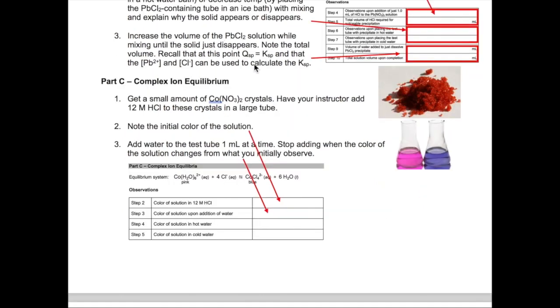Lastly, you will test the effect of volume change. Add water until your solid disappears. Record the volume of the water you add as well as the total volume the solution at that point in the last two rows of the report. Note that the volumes that you record here will be critical later to calculate the Ksp of lead chloride.